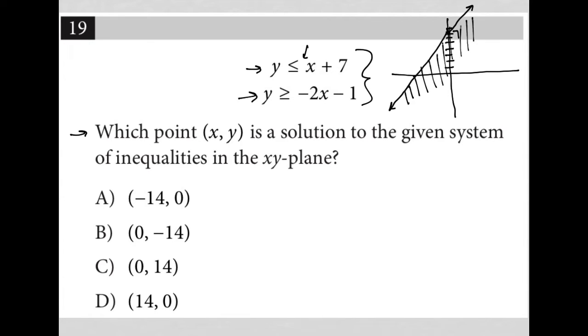And then for this one, it's y is greater than or equal to negative 2x minus 1. So my y-intercept would be here, negative 1. My slope is down 2, right 1. So it's going to look something like this. And it's greater than, so I'll just cross my lines this way. So everything over here where these lines are crossing should be solutions.